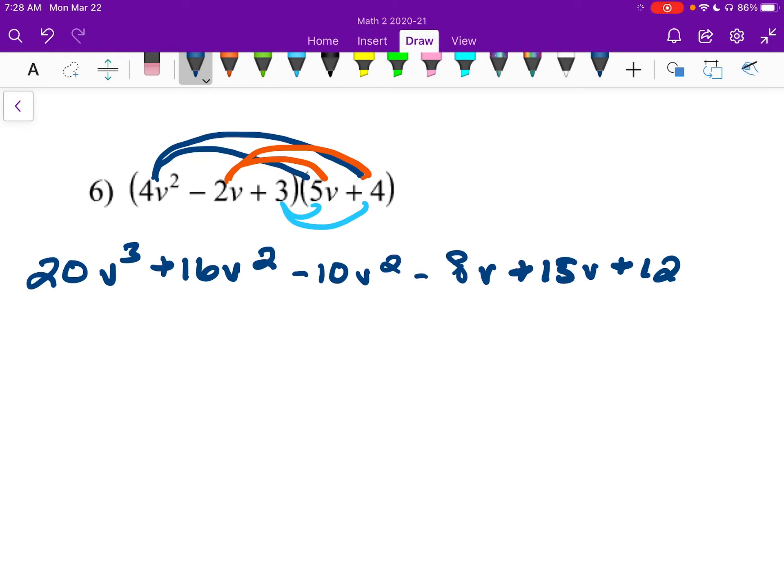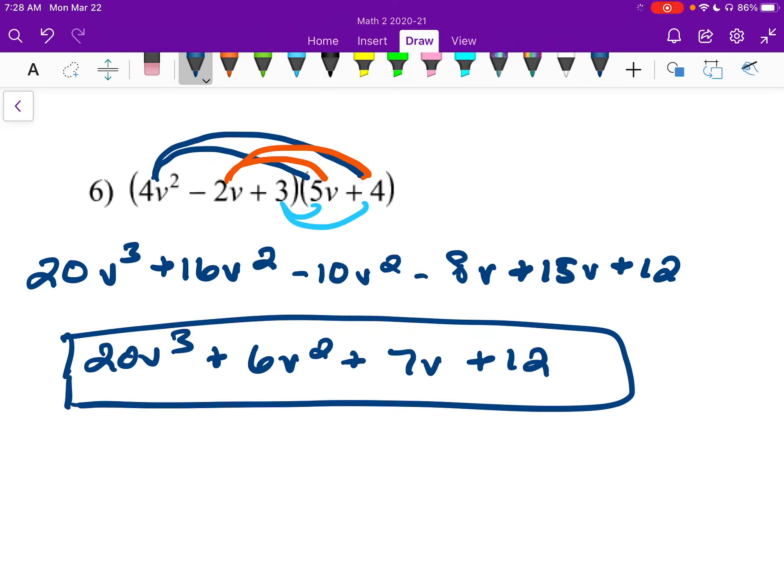Alright, now that we have that, we just combine like terms. So I have 20v cubed plus 6v squared plus 7v plus 12. And there we are.